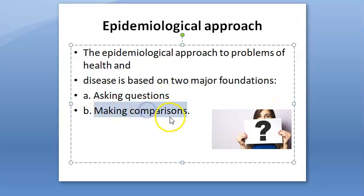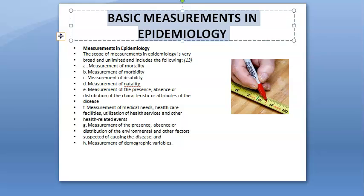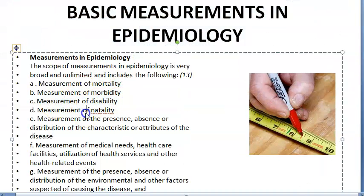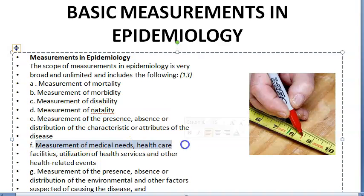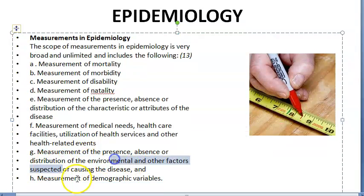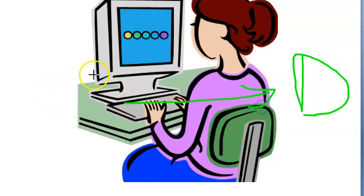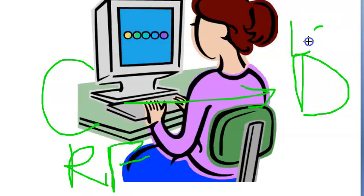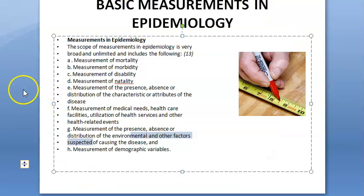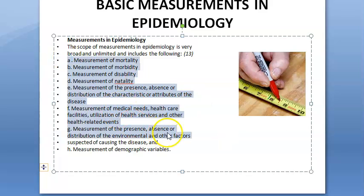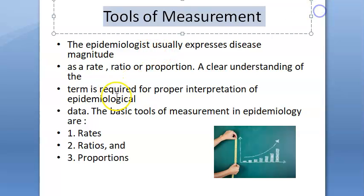Measurements in epidemiology include mortality rate, morbidity rate, disability rate, and natality rate — natality being the number of births. You also measure the presence, absence, and distribution of characteristics, measure medical needs, distribution, and demographic variables. For example, for lung cancer, you want to find out risk factors like smoking, and you do this by asking questions and making comparisons.